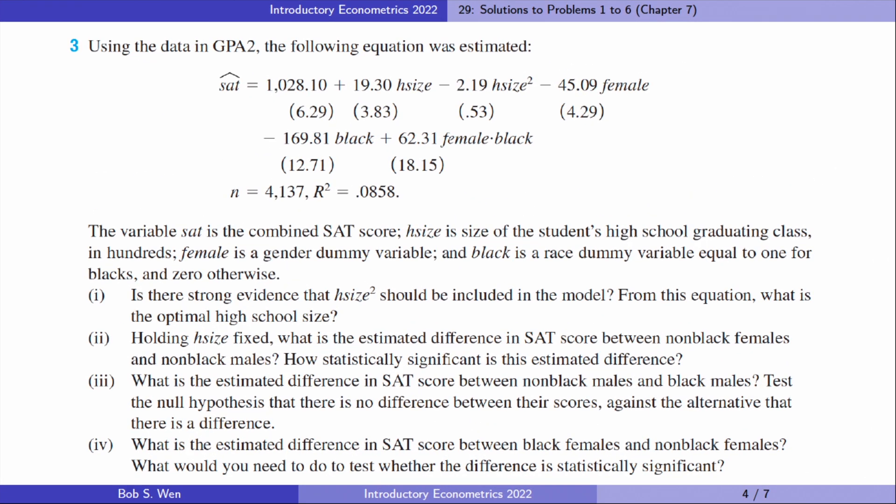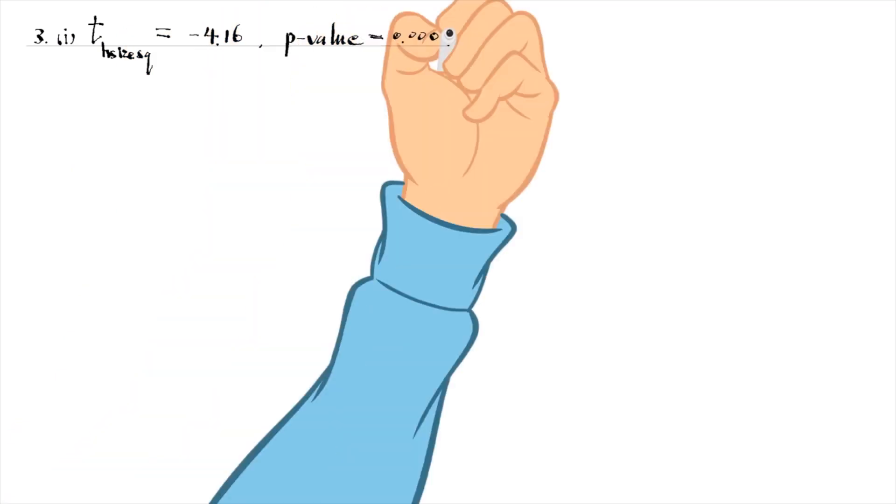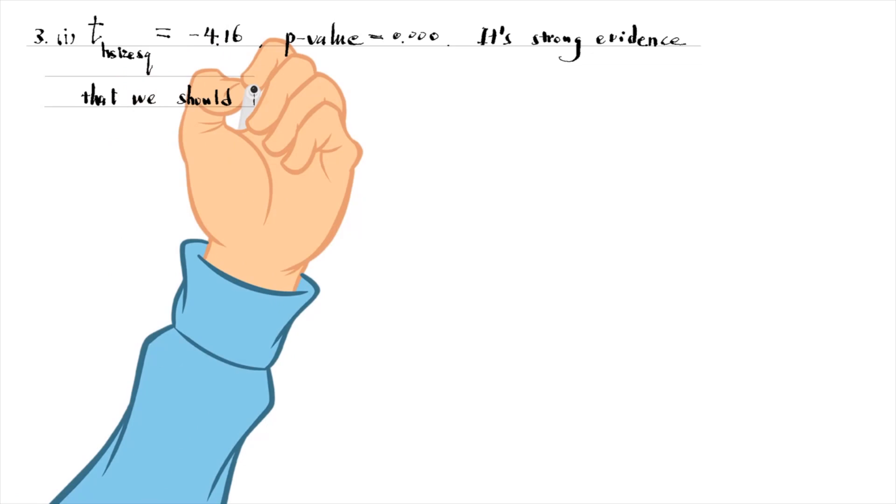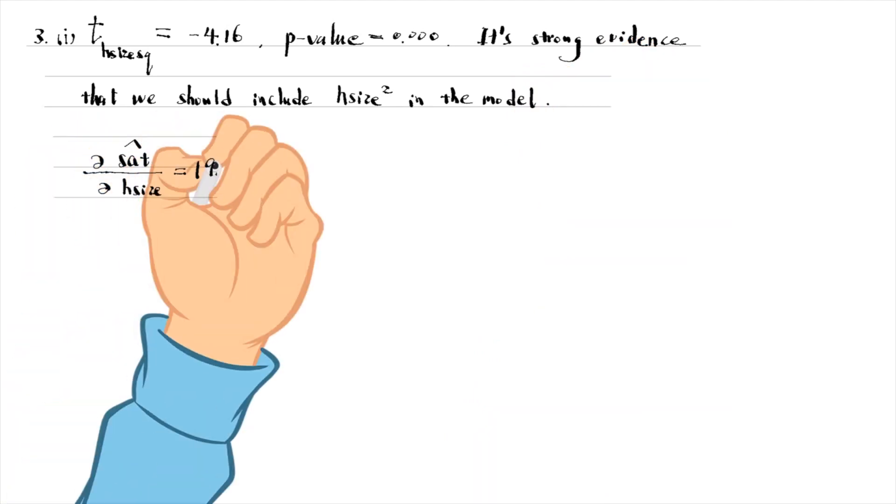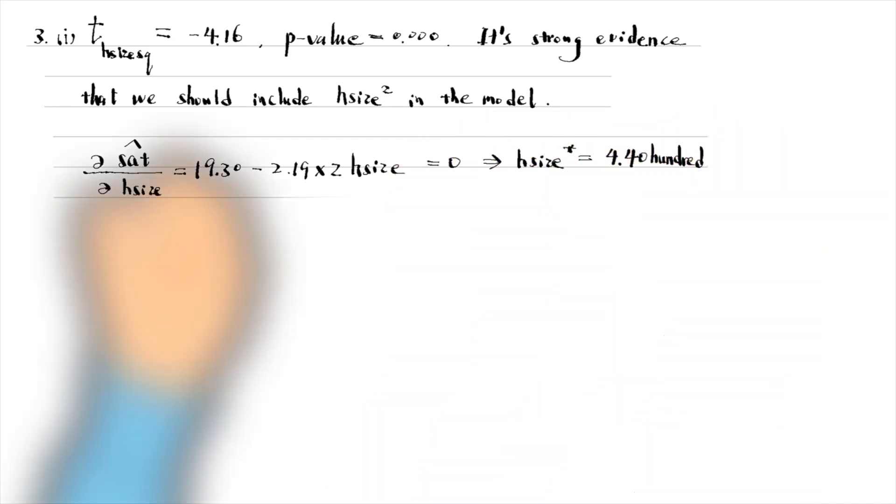Let's find answers to problem number three. In part one, the t-statistic for the square of the school size is minus 4.16, and its p-value is zero to three decimal places. It is strong evidence that we should include it in the model. The optimal high school size can be obtained when the partial effect of high school size on SAT scores equals zero. The optimal size is 440 students.